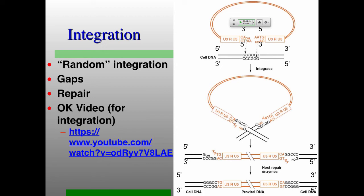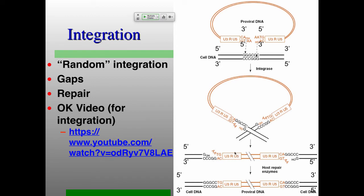Once we have our double-stranded DNA with direct repeats at either end, we need to get it into the host genome — integration. The integrase protein integrates more or less randomly into the host genome. It binds to the ends — the directly repeated sequences with U3 and U5 — cuts off the ends, makes a staggered cut in the cellular DNA, integrates making a loop structure, and a couple of bases at the ends get repaired by repair polymerase. You end up with a directly repeated sequence flanking the site of integration.